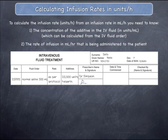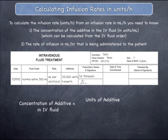Firstly, you can calculate the concentration of the additive in the IV fluid as the number of units of the additive divided by the volume of the IV fluid.